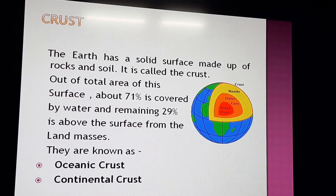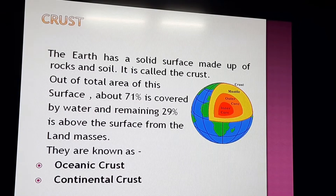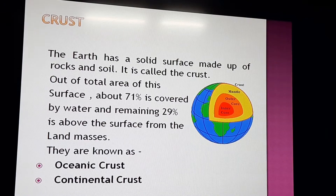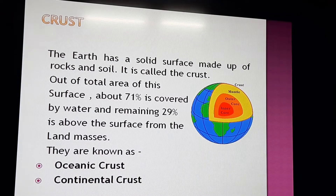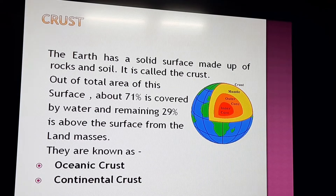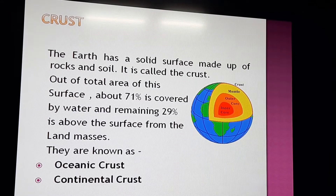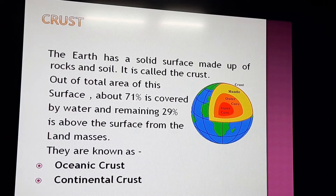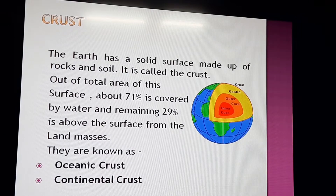As you can see in the diagram on screen, the different layers of the earth are shown. The outermost layer is the crust, followed by the mantle, outer core, and inner core. We can compare the earth with an egg — the outer shell is the crust, then the white part, and the yolk inside. Out of the total surface area, about 71 percent is covered by water and the remaining 29 percent is land masses.